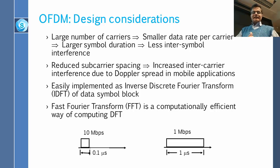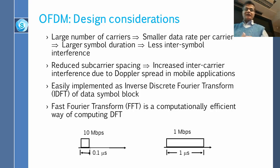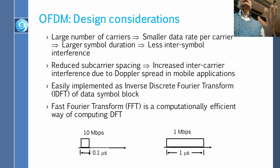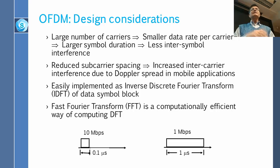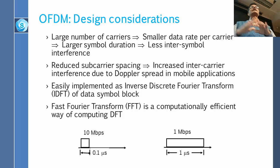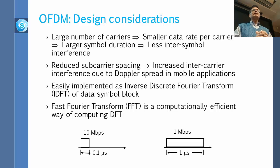OFDM is easily implemented as IFFT and FFT. FFT is a computationally efficient way of computing the DFT. Throughout this course you don't have to take a Fourier transform manually — it is very complicated and you really need computers for it. There is a chip that can do it, and that is all we need to know right now.